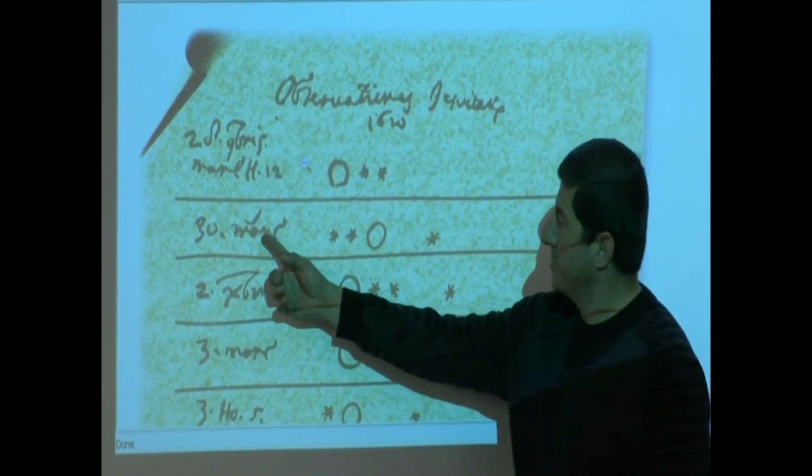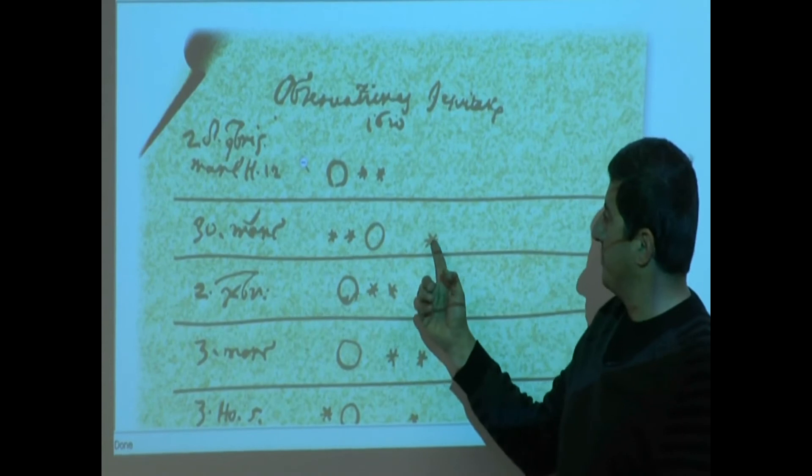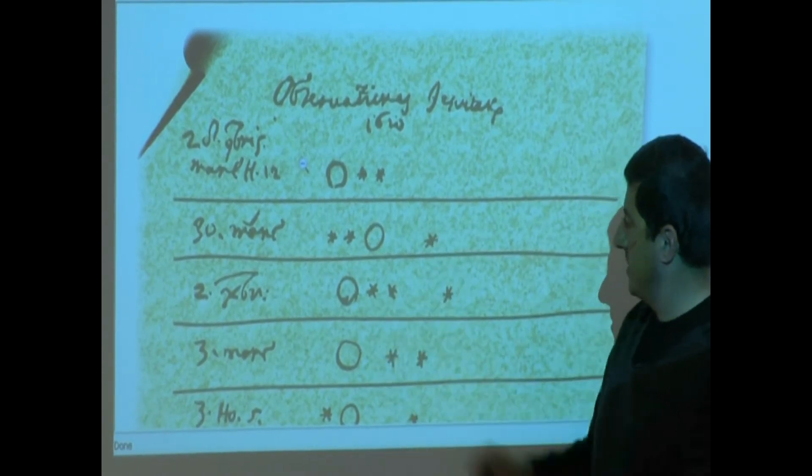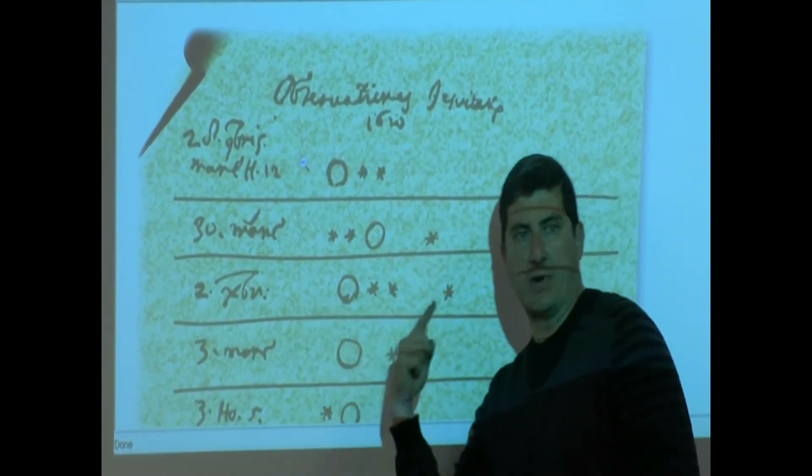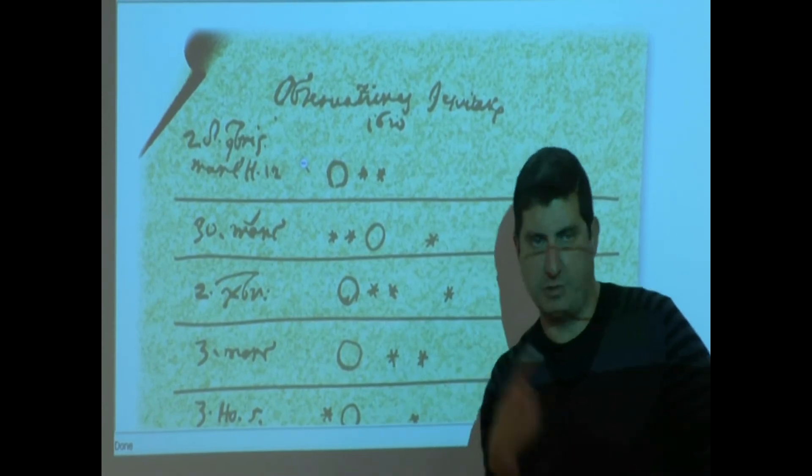He writes a little scribble. Then a couple days later, another two moons appear here and here. And then over here and here. So, basically what's happening, they're going around the Jupiter. You see?